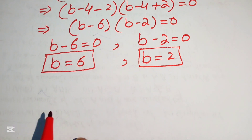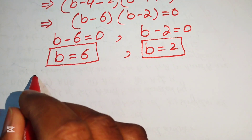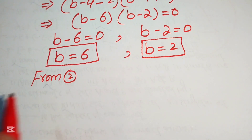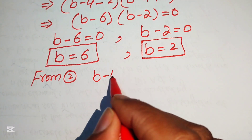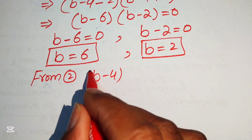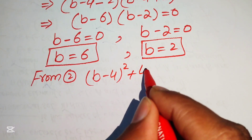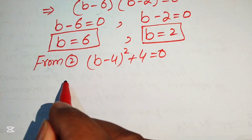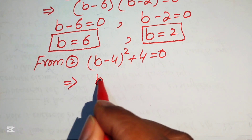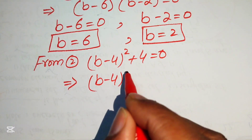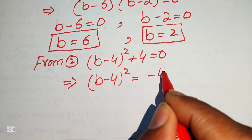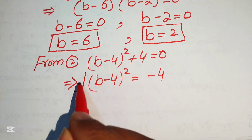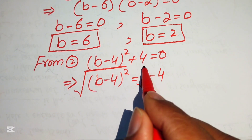Now we focus on equation number 2. Equation 2 is (b minus 4) squared plus 4 equals 0. We move the plus 4 to the right hand side, giving (b minus 4) squared equals minus 4.